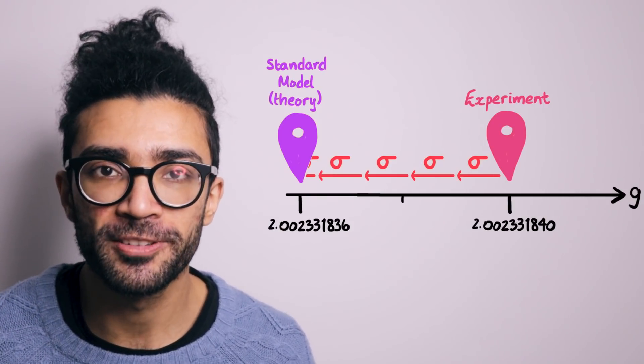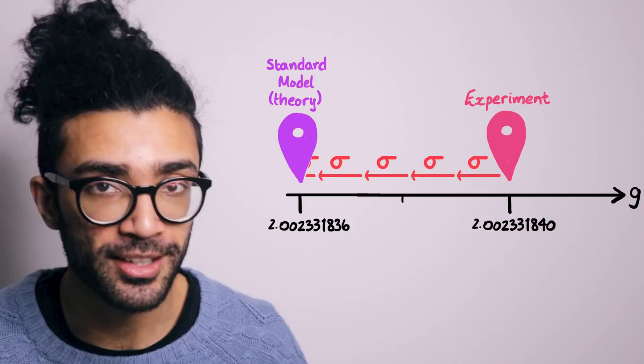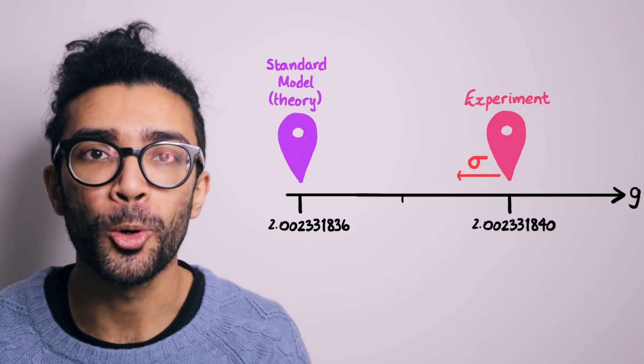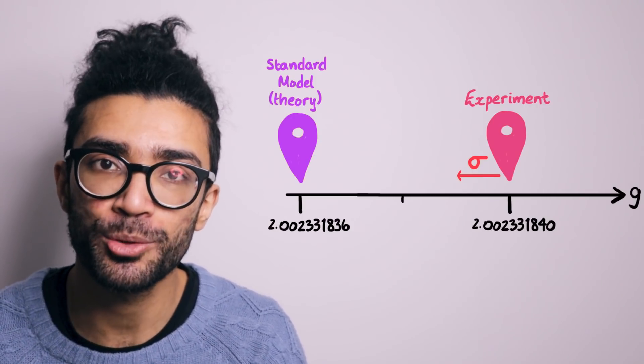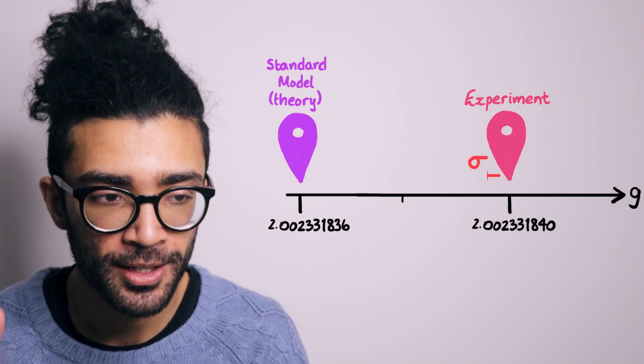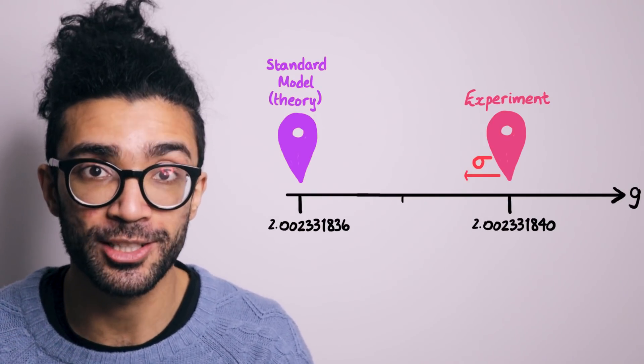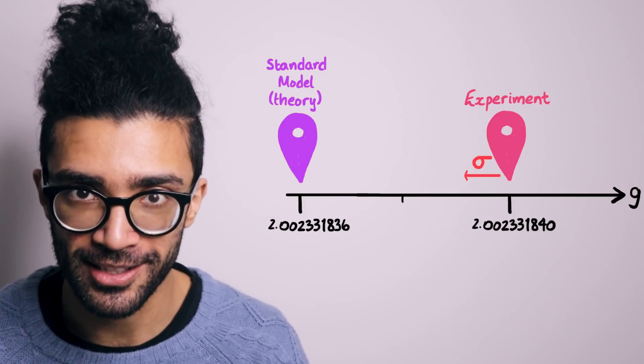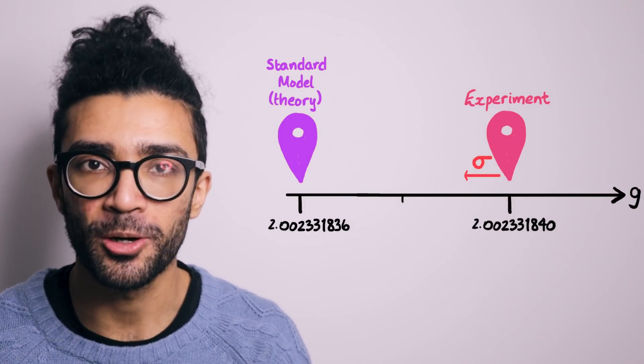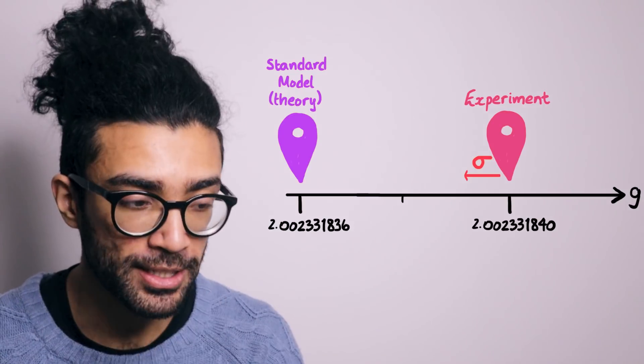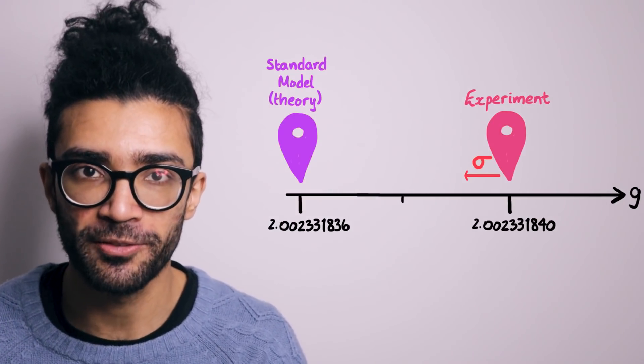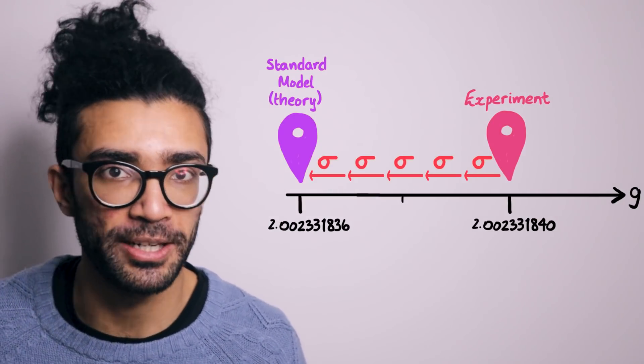And the way to push this over the five sigma threshold is to either conduct more experiments or improve the original experiment in such a way that the errors are reduced. The scientists become more certain of the range in which the experimentally measured value actually lies. In other words, we're reducing the value of sigma, and therefore the theoretical prediction and the experimentally measured value will eventually be more than five sigma apart.